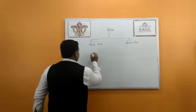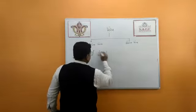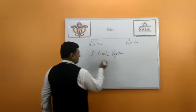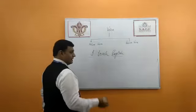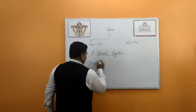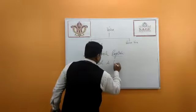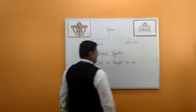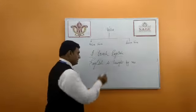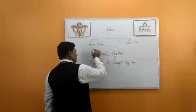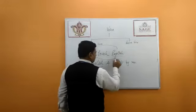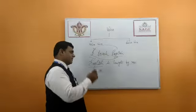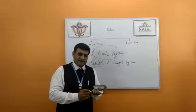Let's look at the board. For example: 'I teach English.' In this sentence, what is the subject? 'I'. What is the object? 'English'. So when we make passive voice, it becomes: 'English is taught by me.' The subject 'I' becomes 'me' and 'English' comes to the subject position. That is how passive voice is formed.